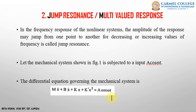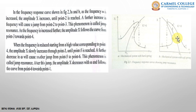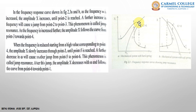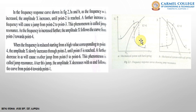For explaining jump resonance, consider the case of a hard spring. When we increase the frequency, the amplitude x correspondingly increases normally up to point 2. When the frequency is increased beyond this point, the amplitude jumps from point 2 to point 3, and from that point it continues to increase. That jump from point 2 to point 3 is called jump resonance — the amplitude of the response jumps from one point to another for increasing values of ω.